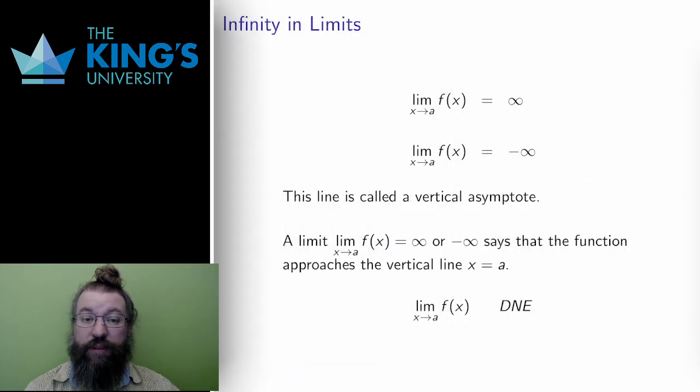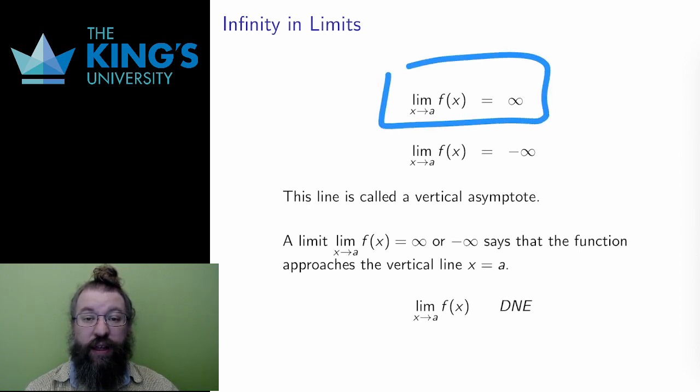There are a few ways that limits can fail to exist. The first line here means, as the input x approaches a, the function gets larger and larger without bound. The limit infinity means larger and larger without bound. It's a process, not a result. It is certainly not a number.